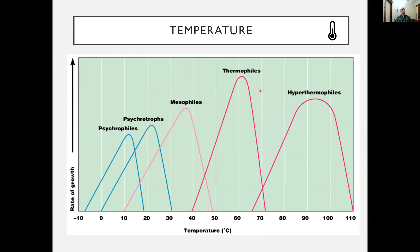Thermophiles and hyperthermophiles really like hot environments — think hot springs or hydrothermal vents. They also survive where other forms of life cannot because it is simply too warm. These organisms have adaptations allowing their internal structures to survive extreme heat. One specific problem is protein denaturation, and these organisms have evolved to combat that and maintain their proteins intact at extremely high temperatures.